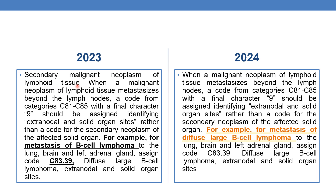In general, whenever metastasis occurs we code the secondary malignant neoplasm of the affected solid organ. However, for the secondary malignant neoplasm of lymphoid tissue, a code from category C81–C85 with the final character 9 should be assigned, identifying the extranodal and solid organ sites, rather than a code for the secondary neoplasm of the affected solid organ.